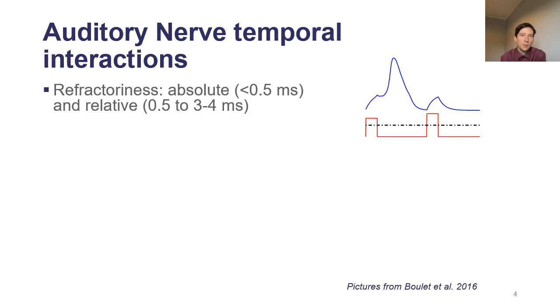Generally speaking, there are four types of interactions between pulses at the level of the auditory nerve. There is absolute and relative refractoriness, so after a neuron spikes it is impossible for a few hundred microseconds or harder for a few milliseconds to make it spike again.